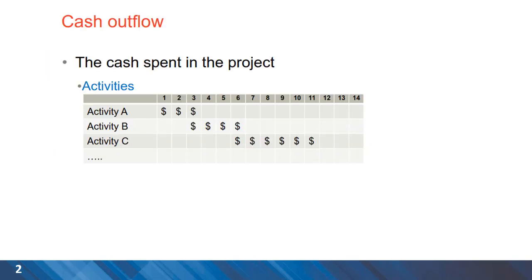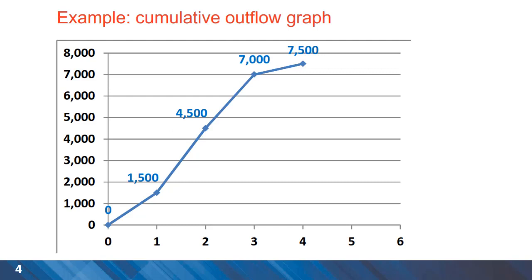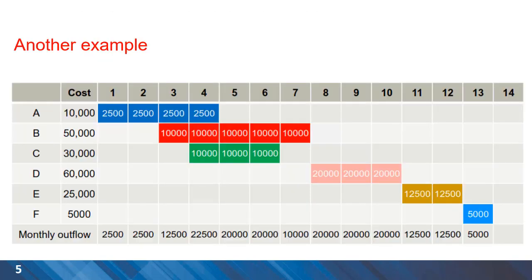Here is an example. We can see a project with a couple of activities and the expenditure for each activity shown in a table. The values for monthly outflows or expenditure can be calculated, along with the cumulative outflow for the project. The values can be plotted on two axes: the horizontal axis represents time and the vertical axis represents dollar values. For example, a project with six activities has its monthly outflow values shown at the bottom.